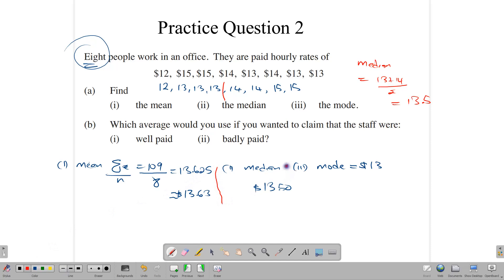And now we're going to answer the second part of the question that says, which average would you use if you wanted to claim that the staff were well-paid? Well, if you wanted to claim that the staff was well-paid, you would naturally want to use the highest average. And the highest average here is the mean, which says that they're getting $13.63 per hour. Of course, there are persons in there that don't. Like, for example, this person gets $12. There are four persons who are not getting that. But the mean is affected by extreme values. That is, when you drop one big number in there, it changes everything. Or one small number, it changes everything. So if you wanted to claim that they were well-paid, you would use the mean in this case because the mean is the highest. If you wanted, of course, to claim that they were badly paid, then of course, you want to use the lowest average. And the lowest average here would be the mode.